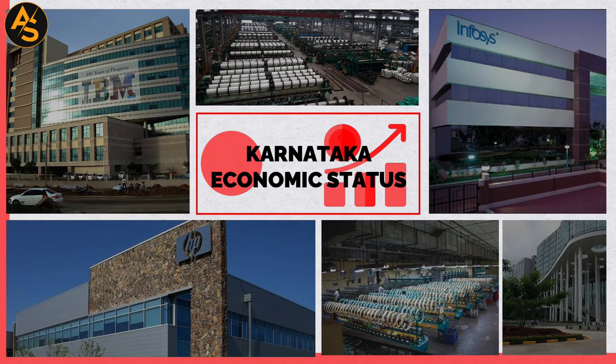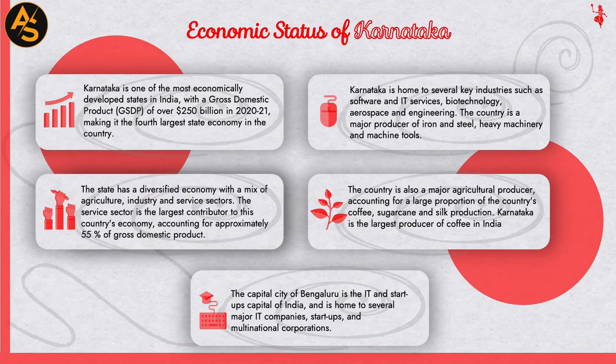Economic Status of Karnataka. Karnataka is one of the most economically developed states in India, with a Gross State Domestic Product of over 250 billion dollars in 2020-21, making it the fourth largest state economy in the country. The state has a diversified economy with a mix of agriculture, industry, and service sectors. The service sector accounts for approximately 55 percent of the GSDP. Karnataka is home to several key industries such as software and IT services, biotechnology, aerospace, and engineering.